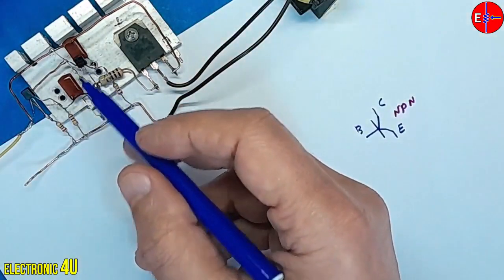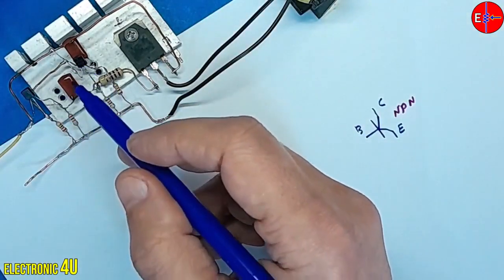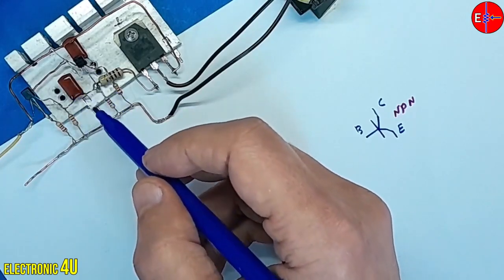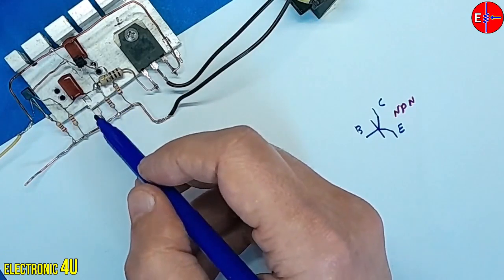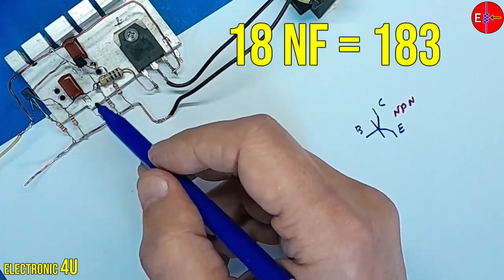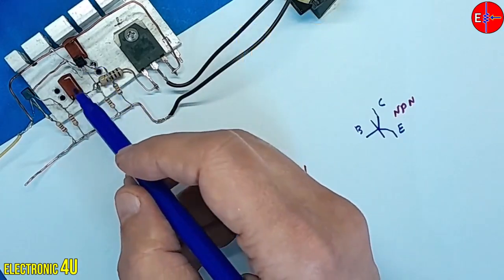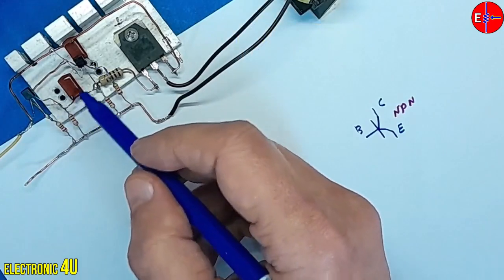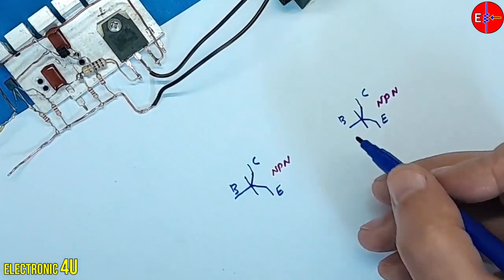Two polyester capacitors are also necessary. A reduction in the capacitor's capacity results in an increase in oscillation speed. I utilized 18 nanocapacitors labeled 183. The capacitors are connected to the base, with the second pin of the capacitors linked to the collector of the transistors.